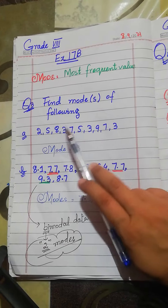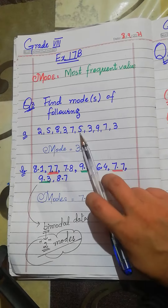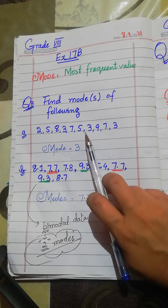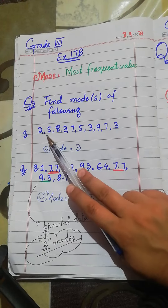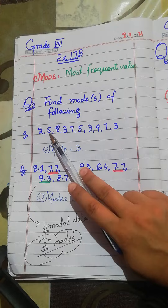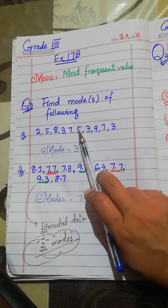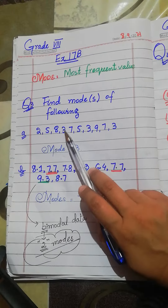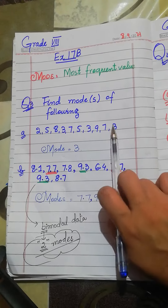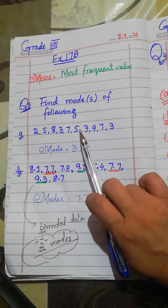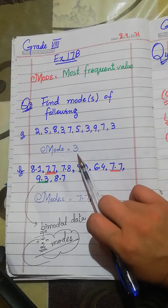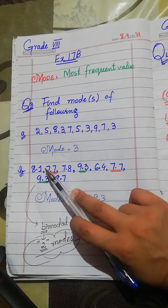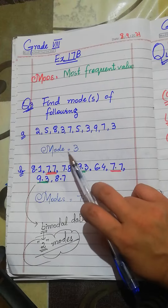The first dataset is 2, 5, 8, 3, 7, 5, 3, 9, 7, 3. We have to calculate the mode, so we see which value is repeated most. Here, 2 appears 1 time, 5 appears 2 times, 8 appears 1 time, and 3 appears 3 times — so the mode is 3.